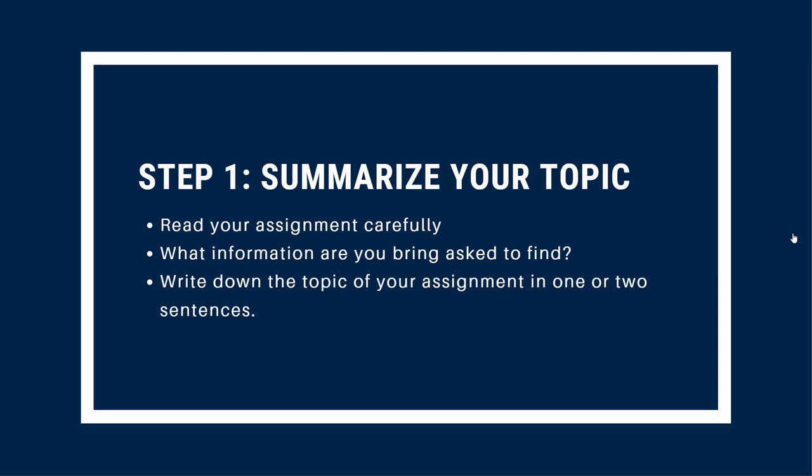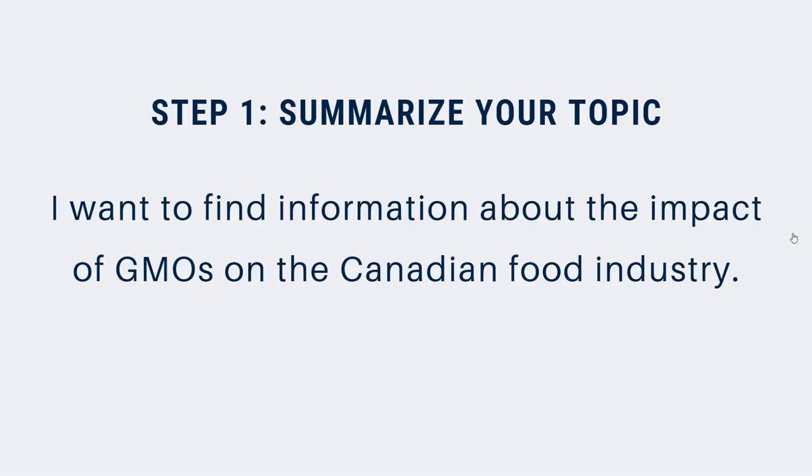The first step is summarizing the topic of the assignment. Start by reading your assignment over carefully. Make sure you understand what you're being asked to do, and check in with your instructor if you don't. Find the action words — look for words like define, describe, compare and contrast, and others. Look at the topic of your assignment: what are you being asked to write about, and how does it relate to the rest of the course material? Using this information, write down the topic of your assignment using just one sentence. We've summarized our imaginary assignment with the sentence: I want to find information about the impact of GMOs on the Canadian food industry.